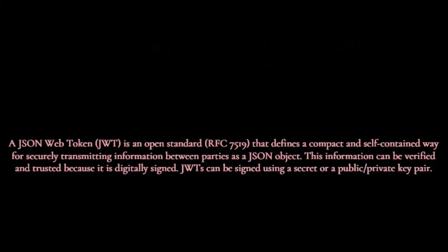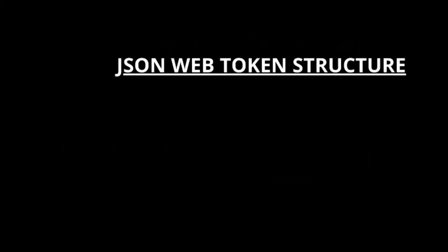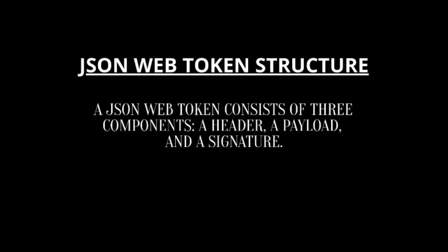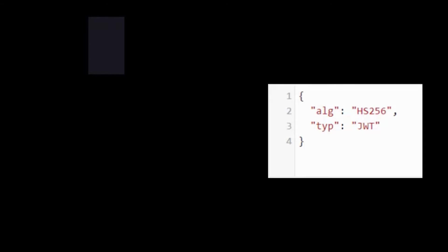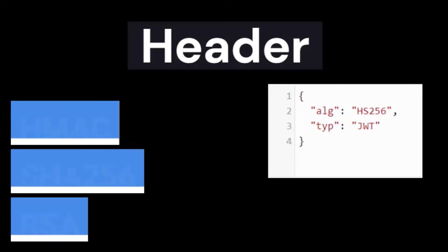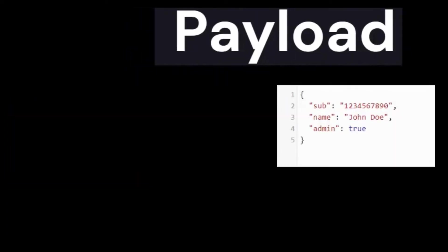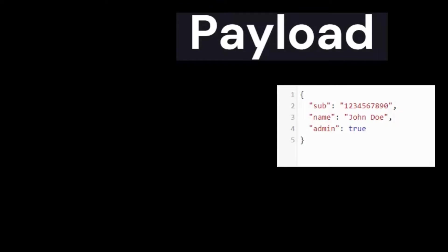A JSON Web Token consists of three components: a header, a payload, and a signature. The header typically consists of two parts: the type of token, which is JWT, and the hashing algorithm that is used, such as HMAC, SHA-256, or RSA.